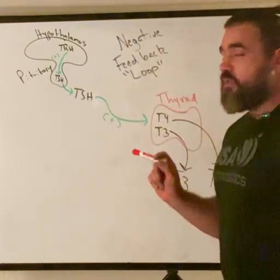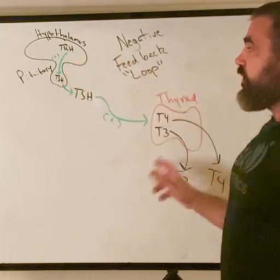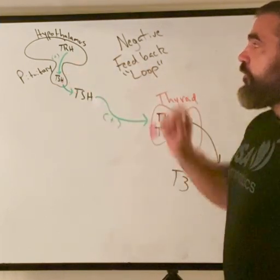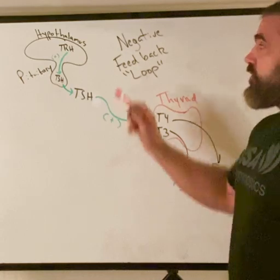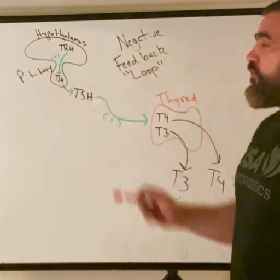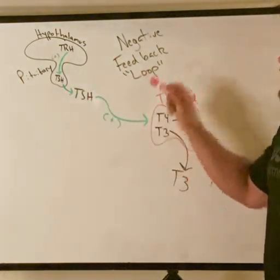So, negative feedback loops — we have an example here with three glands: the hypothalamus from the brain, the pituitary gland, and the thyroid gland.